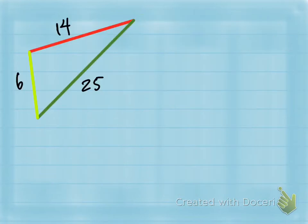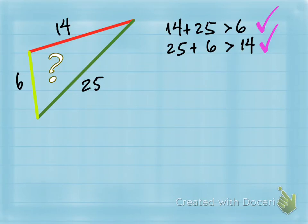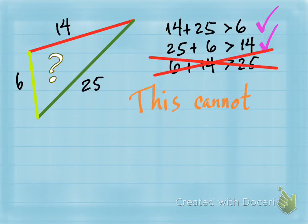To show a contrasting example: what if a triangle had side lengths six, 14, and 25? Could you make a triangle with those three numbers? Test the inequalities: 14 plus 25 — is that greater than six? Yes. 25 plus six — is that greater than 14? Yes. But what about six plus 14 — is that greater than 25? No. Six plus 14 is 20, and 20 is not greater than 25. Therefore this cannot be a triangle.